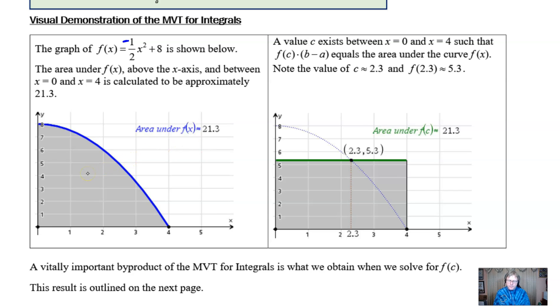Let's move to this right picture. It says a value c exists between 0 and 4 such that f(c) times the difference between b and a, which is 4 and 0, is equal to the area under that curve f(x). And it turns out that that c value is about 2.3.